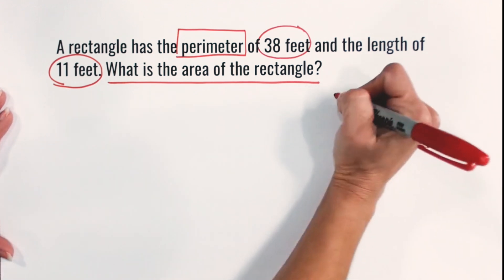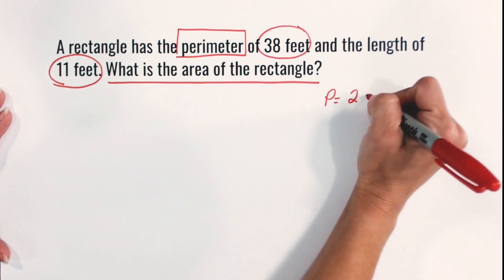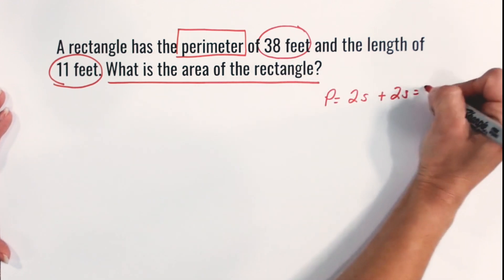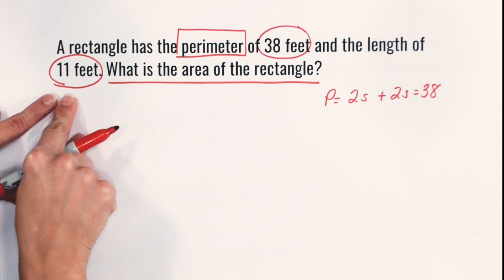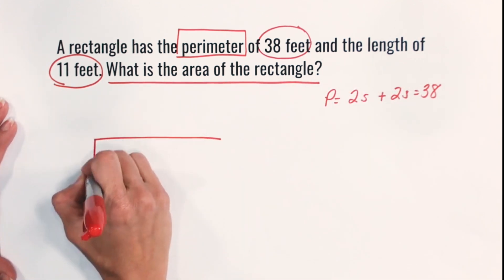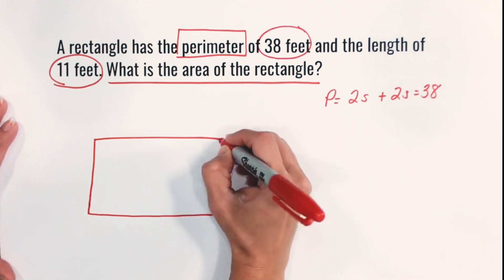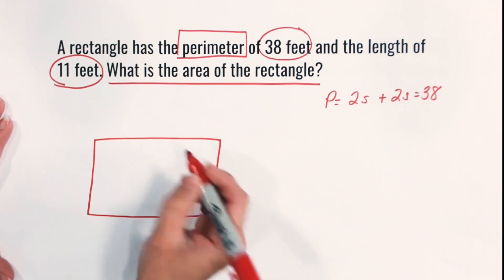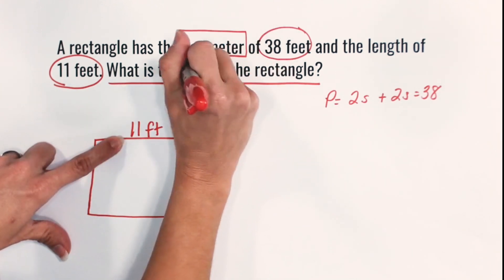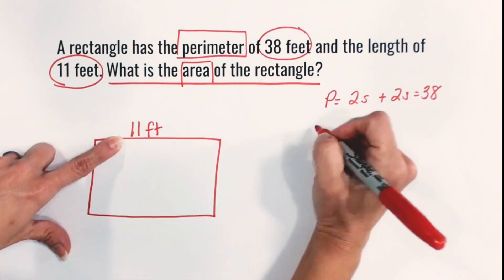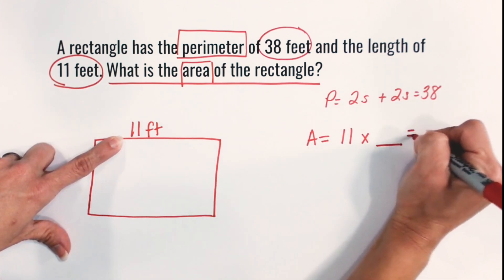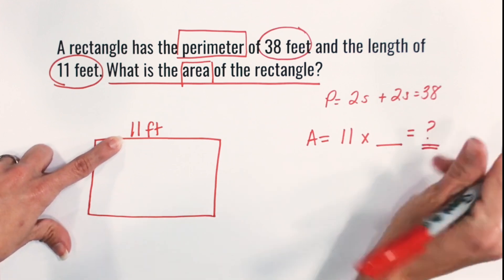So we know that if we have perimeter that's equal to 2 times side plus 2 times side and that is equal to 38. And now we know that one of those side lengths is 11 feet. So if we had a rectangle here, now I don't know what shape the rectangle is I'm just going to draw one out, but if one of the sides is 11 feet and I'm applying the area formula, then I'm going to have area is equal to 11 times something and I don't know what that is. So that's what I'm trying to figure out here.